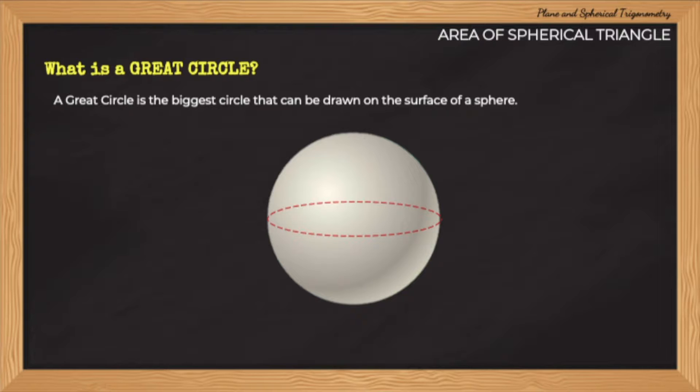If we consider the planet Earth as the sphere, the equator and the prime meridian are examples of great circles.